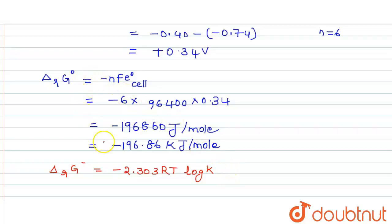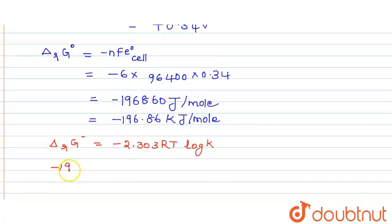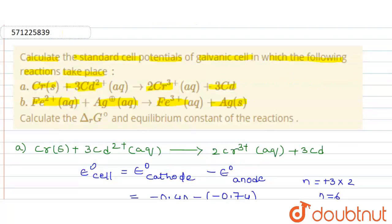And we got ΔrG° value as minus 196,860 that is equal to minus 2.303 R value. We know the R value as 8.314 into...